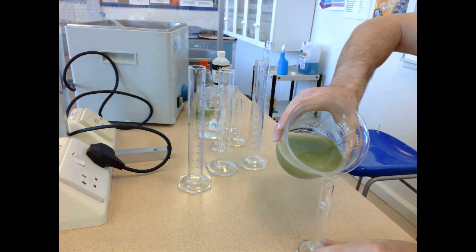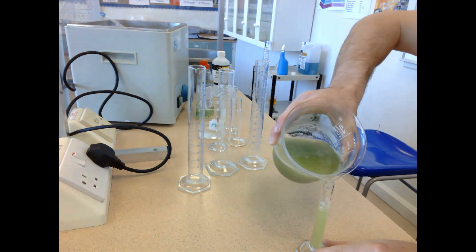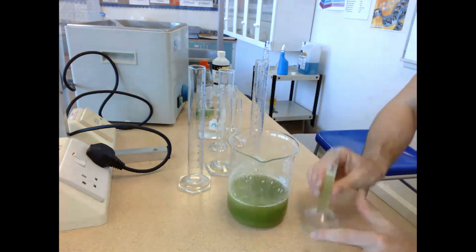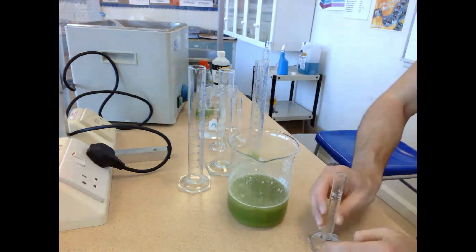The next step is measuring 10 milliliters of celery juice and adding it to graduated cylinder one. I repeated this process for graduated cylinders two and three, adding 10 milliliters to each.